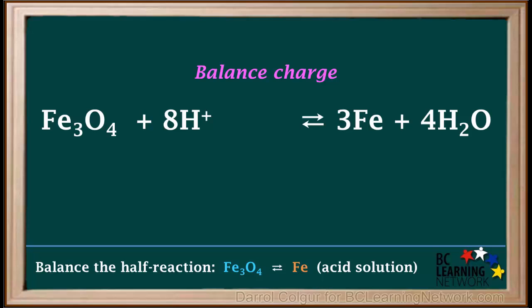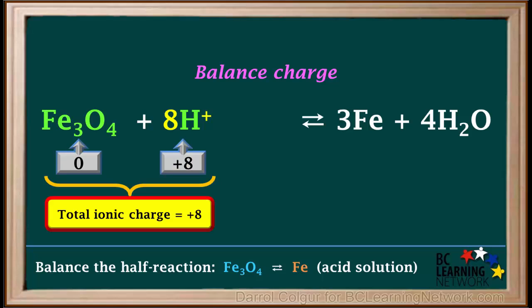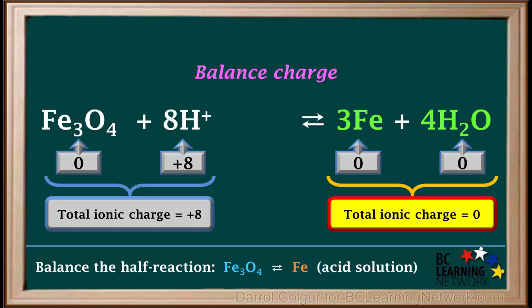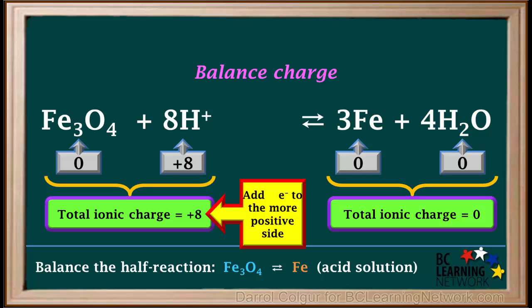Our last step is to balance charge. The charge on Fe3O4 is zero, and the total charge on 8H plus is positive 8. So, the total ionic charge on the left side is zero plus 8, which equals positive 8. Looking on the right side, we see that the total charges on the 3Fe and the 4H2O are both zero. So, the total ionic charge on the right side is zero. In order to balance charge, we must add enough electrons to the more positive side to make the charges on each side equal. Because each electron has a negative charge, adding 8 electrons to the left side will be needed to equalize the charges.